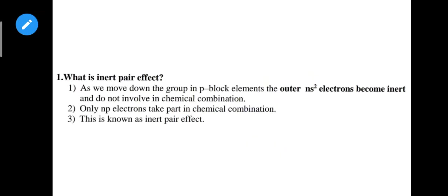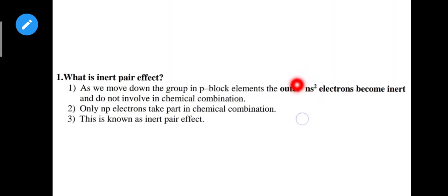The first question: what is the inert pair effect? The inert pair effect occurs in the heavier p-block elements. As we move down the group, the outer ns2 electrons become inert - meaning the ns2 electrons will not take part in bonding. This is the inert pair effect. This answer is from the second lesson in the book.